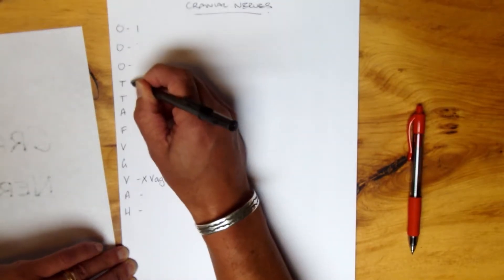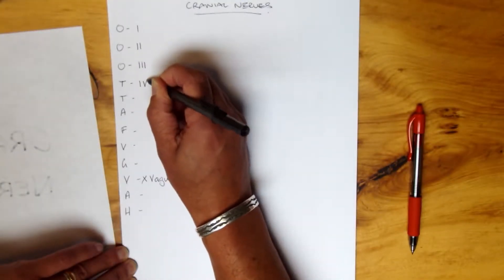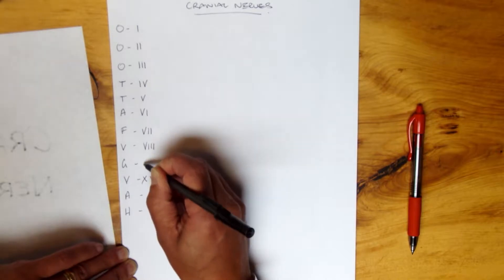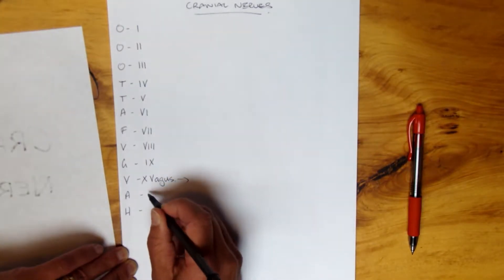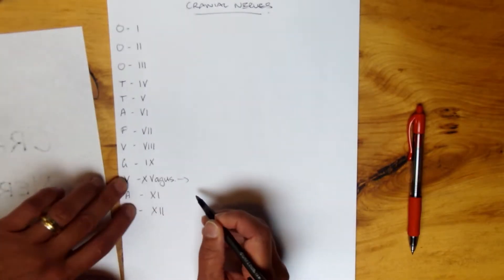Let's just make, let's lay the numbers out in Roman numerals. That's how we're going to remember them, that's how they're presented in the exam. So seven, and then eight, and then nine, ten. I should move this across a little bit. Eleven, twelve.